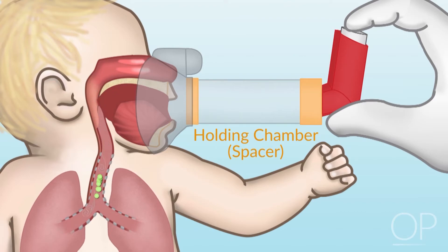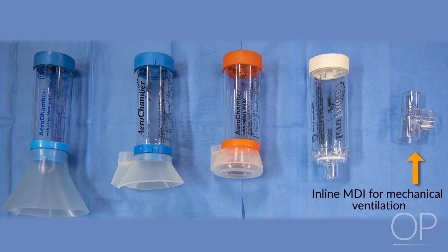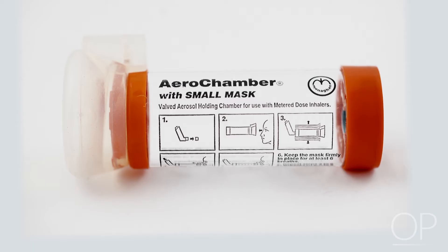We have several different interface options. Depending on the patient's size, we have different masks and different sized chambers. Additionally, we have spacers that are built for endotracheal and/or tracheostomy tubes. Also, we have inline MDIs, which can be used during mechanical ventilation. I have selected a pediatric sized chamber with an appropriate mask for this patient.